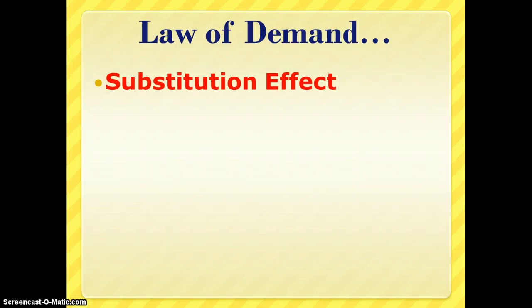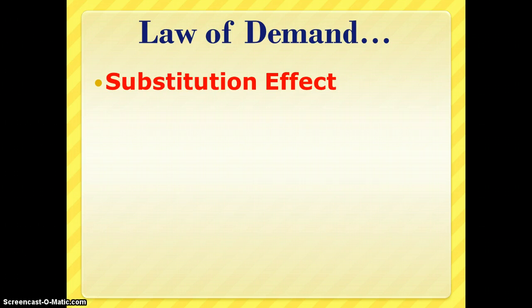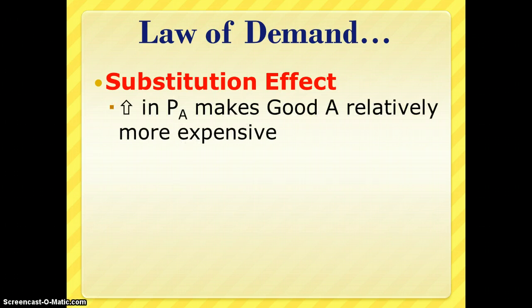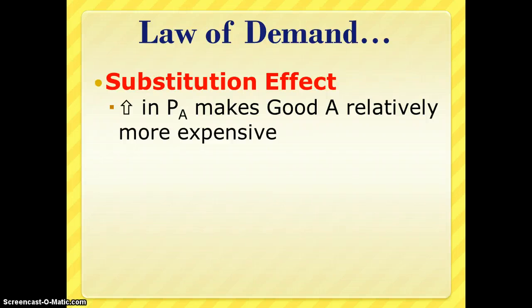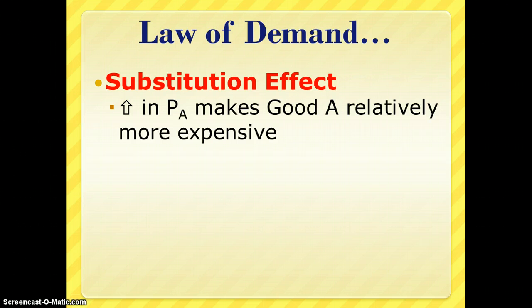As a refresher, the law of demand tells us that we want to consume more of a good as the price drops, and less of the good if the price rises. The reason is in part because of the substitution effect. If two goods are substitutes, then an increase in the price of good A makes good A relatively more expensive than good B, so the quantity demanded for good A will decrease — essentially we move up the demand curve.